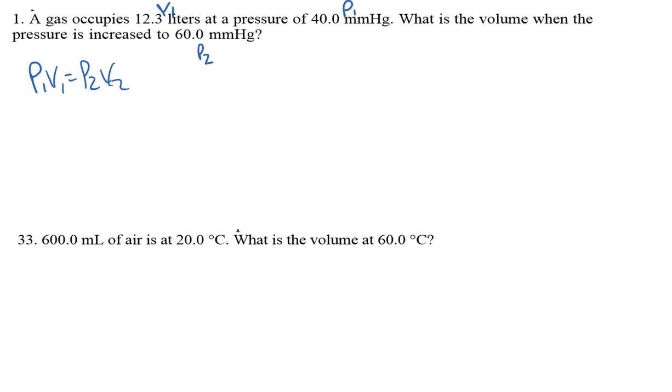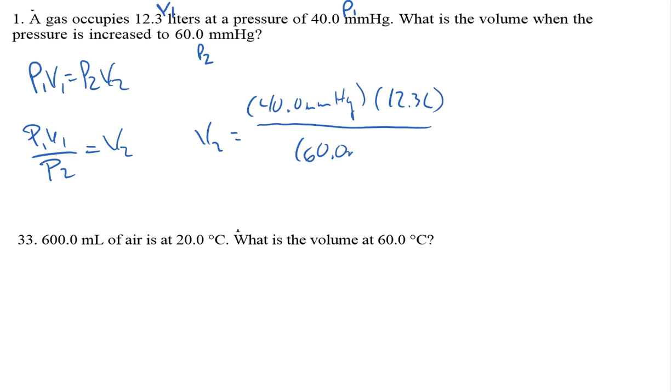I'm trying to solve for V2, so the first thing I want to do is isolate V2. Now it's a matter of plugging in some numbers. V2 is equal to 40 millimeters of mercury times 12.3 liters divided by 60 millimeters of mercury. Millimeters of mercury will cancel out, leaving with the units of just liters. And V2 works out to 8.2 liters, which, as predicted, is a smaller volume than what we started with.